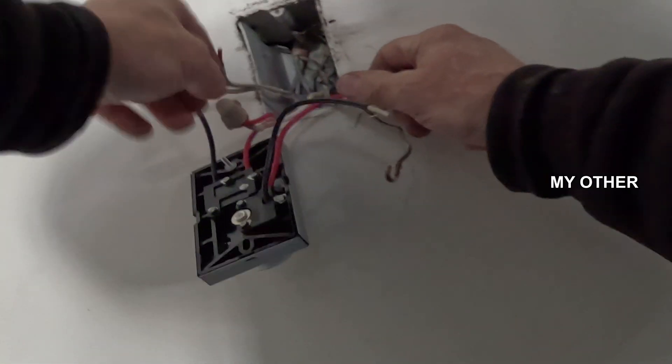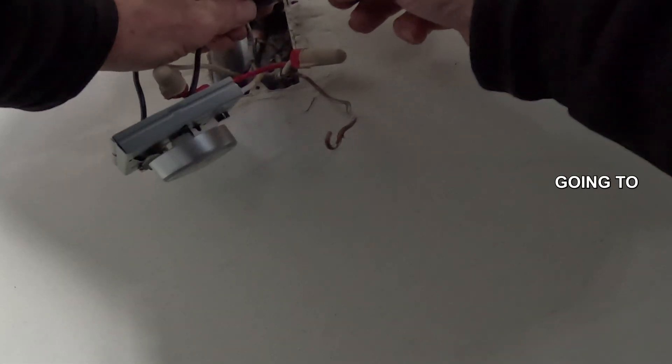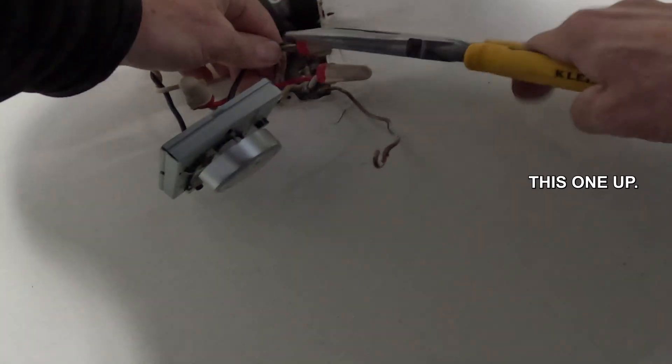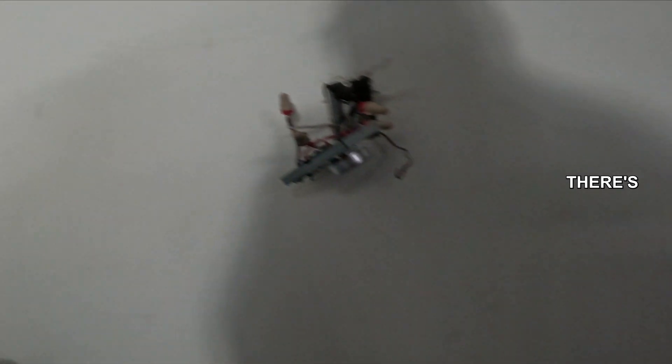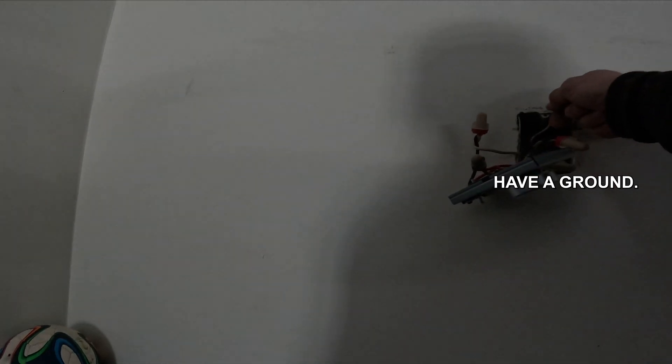Then I'm going to take my other load out and I'm going to do the same. Tighten this one up. You'll notice on this newer thermostat nothing there is conductive so it doesn't have a ground.